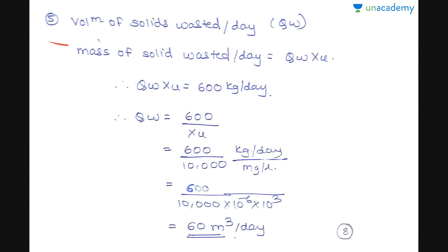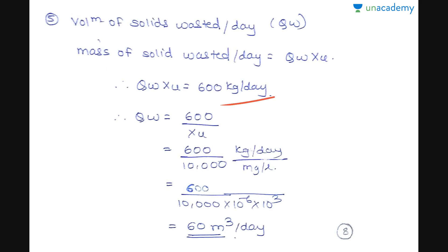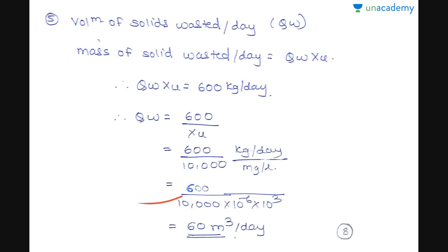Next we find the volume of solids wasted per day, Qw. The formula is: mass of solids wasted per day = Qw × XU. We already calculated the mass as 600 kg/day, so Qw = 600 / XU. With XU = 10,000 mg/L, applying unit conversion (dividing by 10⁻⁶ × 10³), we get Qw = 600 / 10,000 × 10⁻⁶ × 10³ = 60 m³/day. So the volume of solids wasted per day is 60 m³/day.